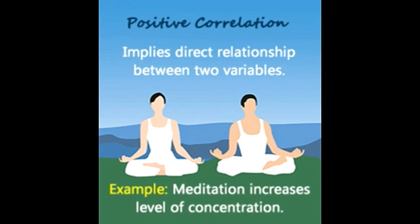According to Deborah J. Rumsey's 'Statistics for Dummies,' psychology uses various methods for its research, and one of them is studying the correlation between any two variables. Correlation is nothing but the measure of degree of relation between two variables, and it can be plotted graphically to show the relationship between them.